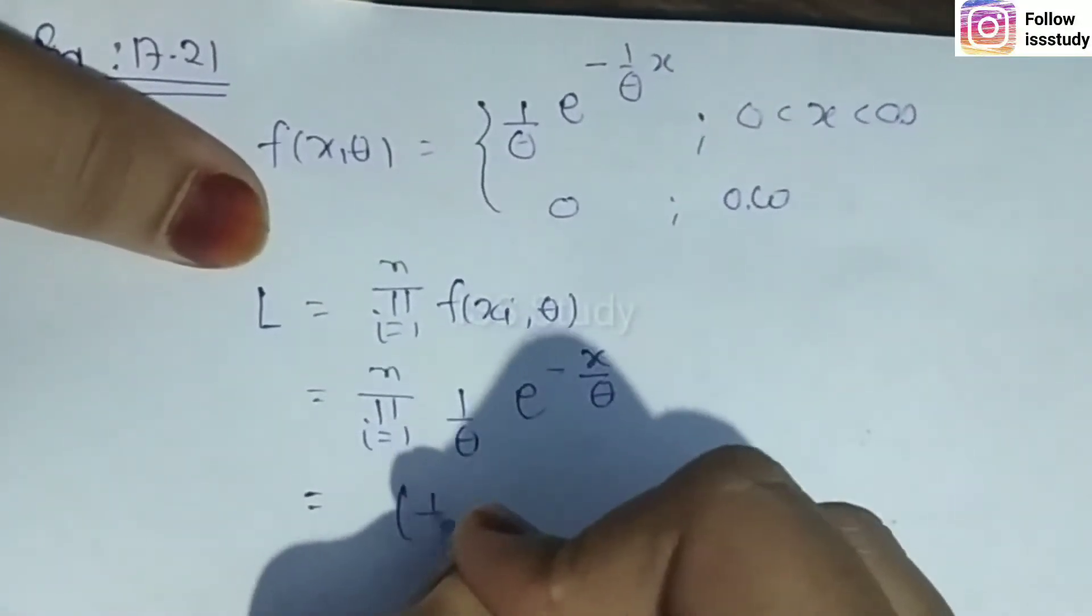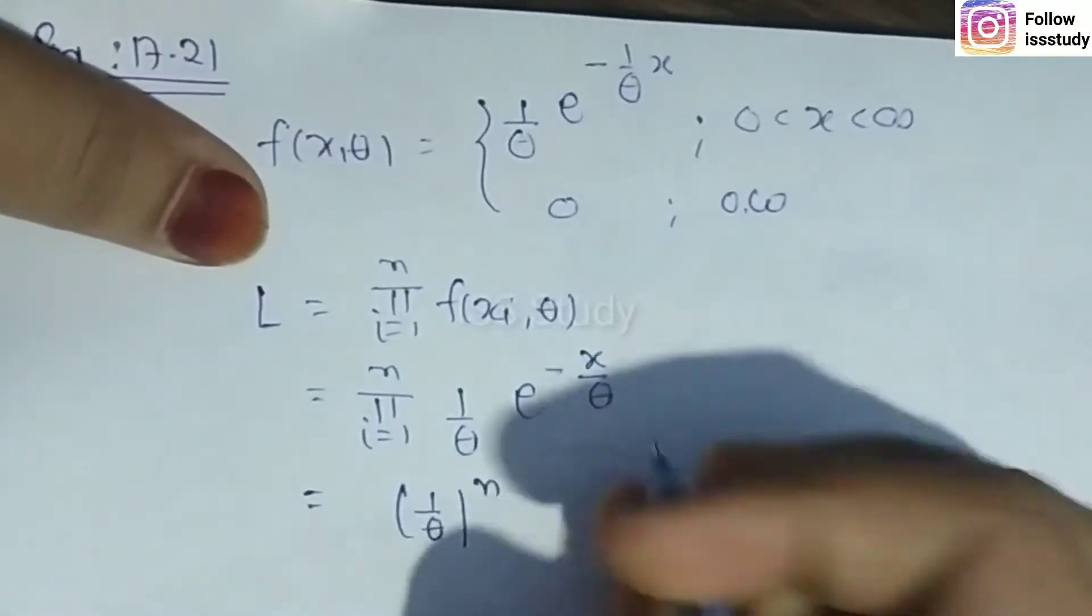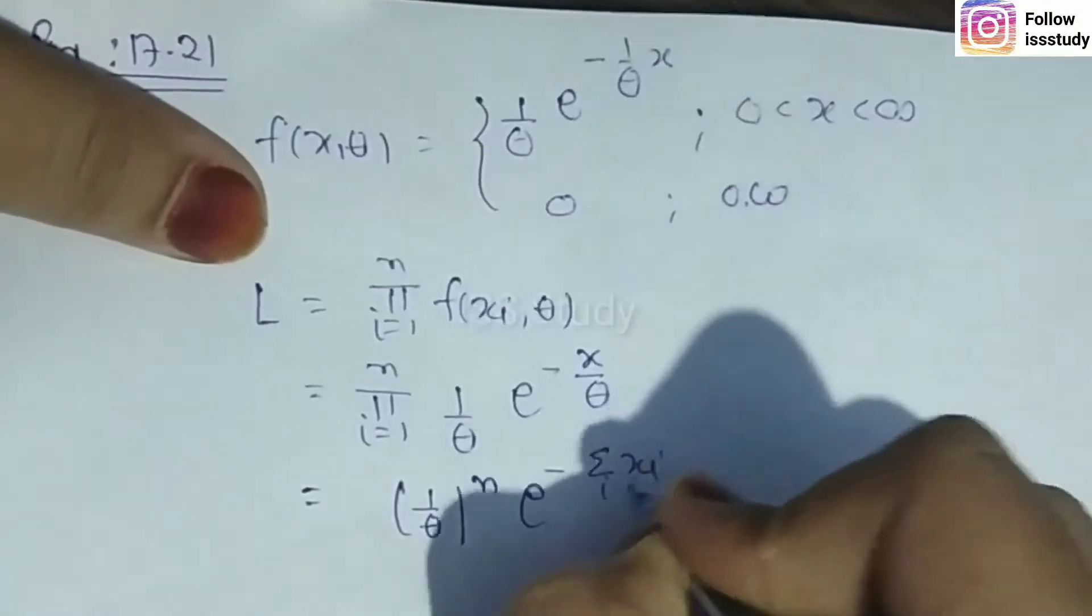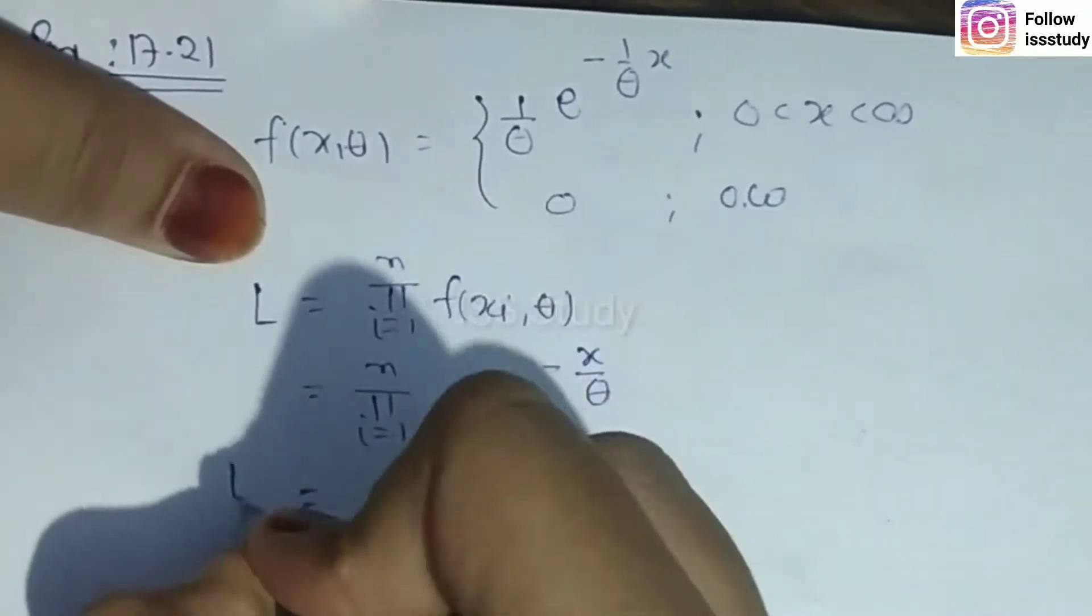You can see 1/θ is a constant, so the power becomes n. And e to the power summation over i of xi/θ. We can write this.